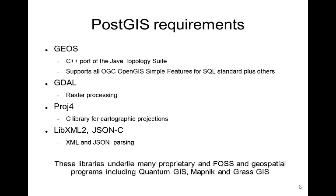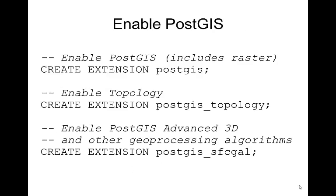These same libraries underlie virtually every open source GIS program out there, and are also integrated into many commercial products — the licensing allows that. So commercial products actually use these same libraries to implement their functionality, and what you're paying for is largely the interface onto these functions. These libraries underlie programs like QGIS, MapNic, GRASS, and others.